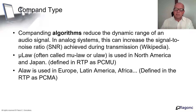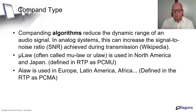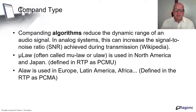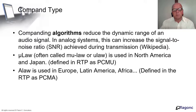Compandor types: sometimes we have the coder and decoder, but we also have the compandor type — algorithms to reduce the dynamic range of an audio signal. When you transfer from an analog signal to a digital signal, you have different algorithms to represent this digital signal. In North America, they use the mu-law (often called U-law), defined in RTP as PCMU — Pulse Code Modulation mu-law — an algorithm used in North America and Japan. In Europe, Latin America, and Africa, they use A-law, defined in RTP as PCMA. The difference between these compandor types is minimal, but it's important to know which encoding applies to your digital circuit based on region.